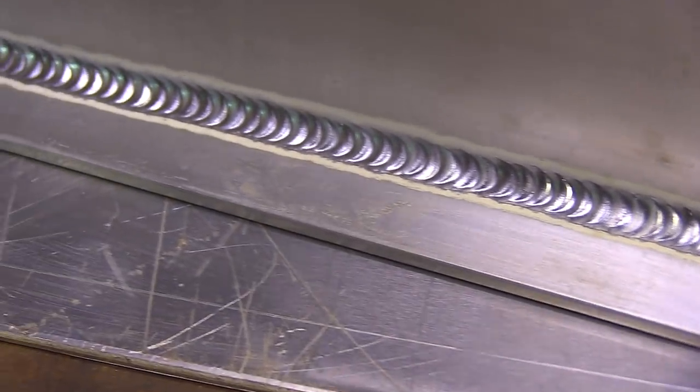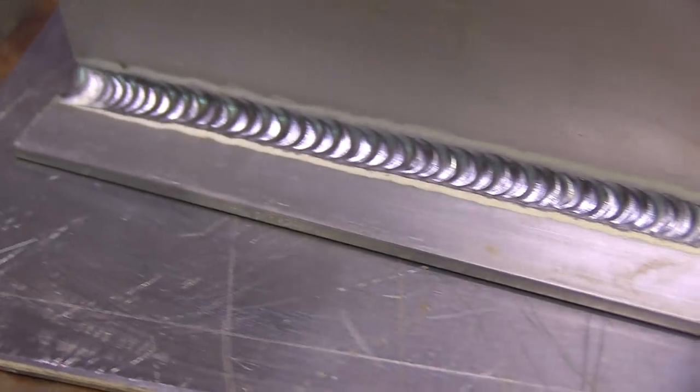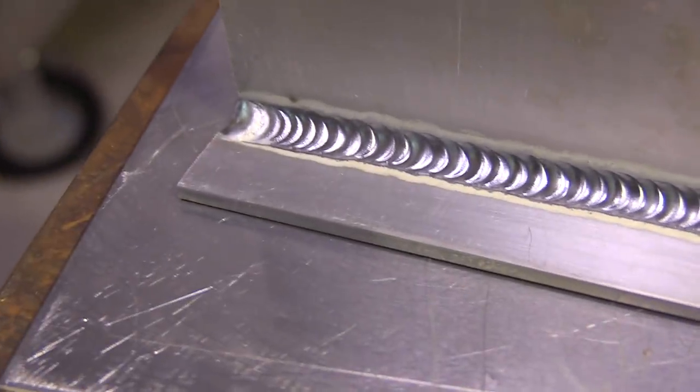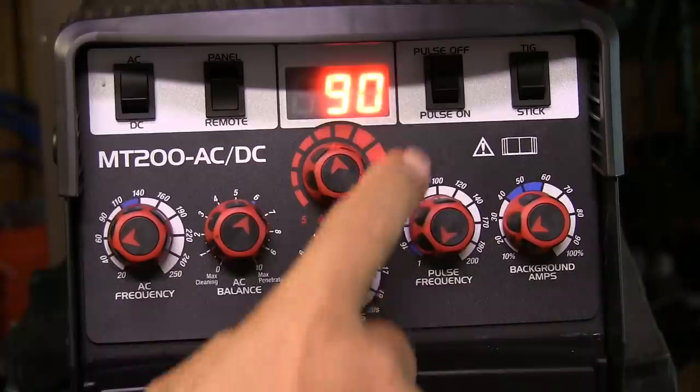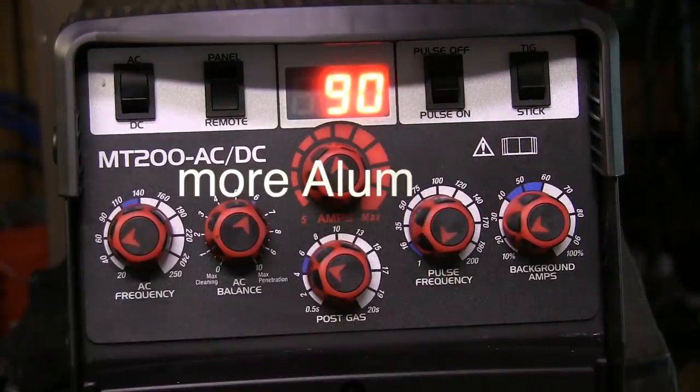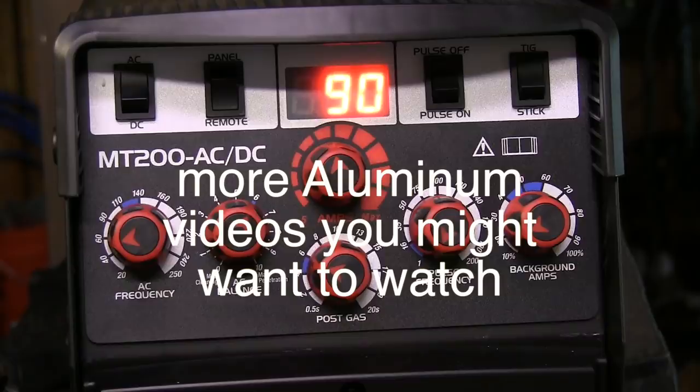Now I use a 3/32 filler metal on this thing, 4943. That was not a typo. 4943 is a relatively new alloy. It's a lot like 4043, but it's got really good properties. And I'm going to show, I'm going to link up to some videos I think you might be interested in, some past videos I've done on TIG welding aluminum.